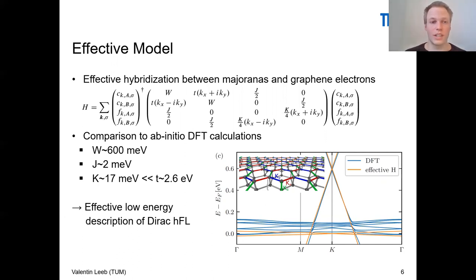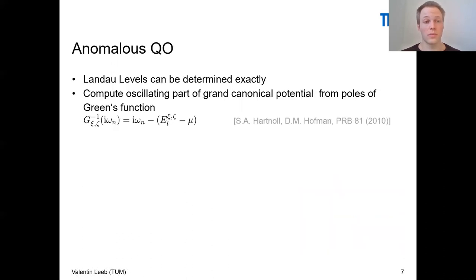What's really nice about this low energy Hamiltonian is that it's possible to calculate the Landau levels exactly in analytic form. After the calculation of the Landau levels, it's possible to calculate the Green's function, the finite temperature Green's function. Due to a theorem proven by Hartnell and Hofman, the complex poles of the Green's function are connected to the oscillating part of the grand canonical potential.